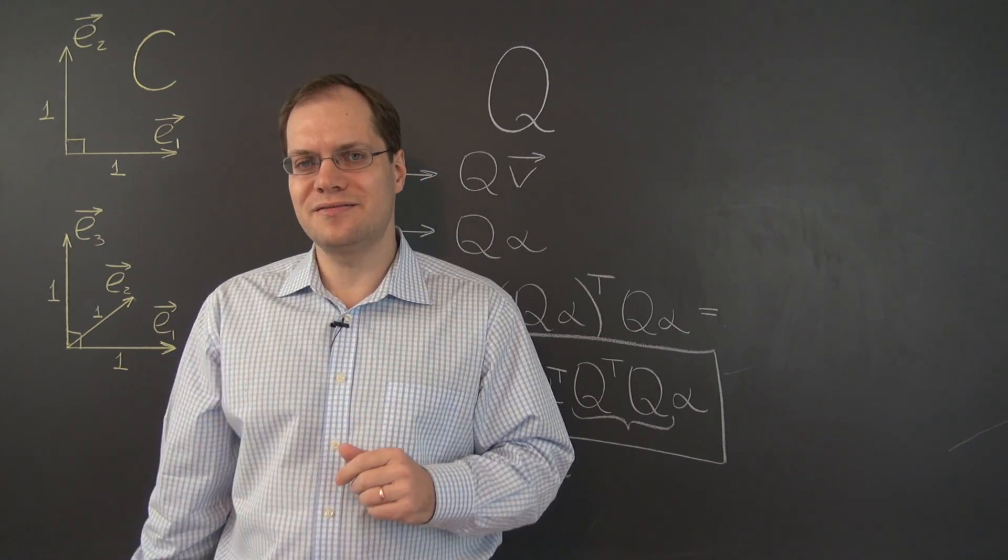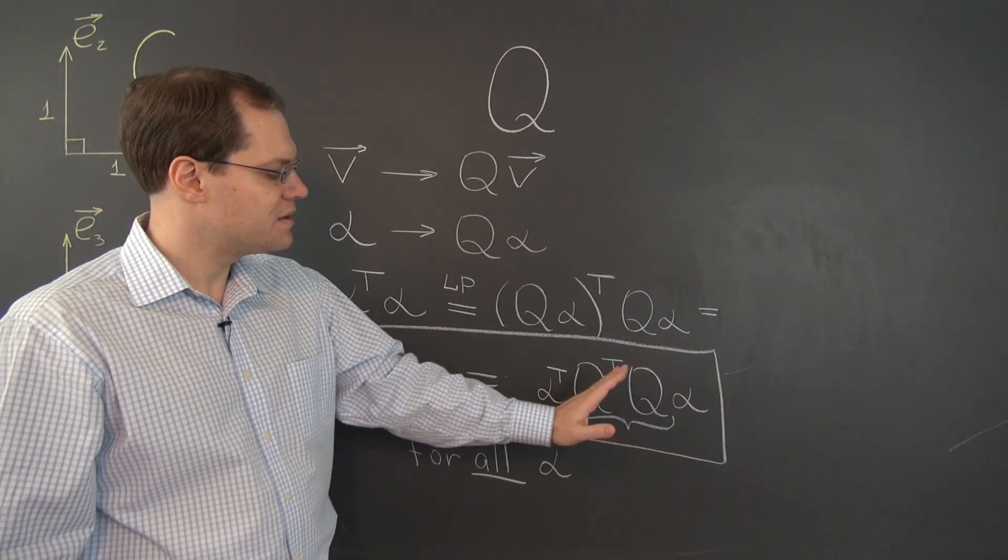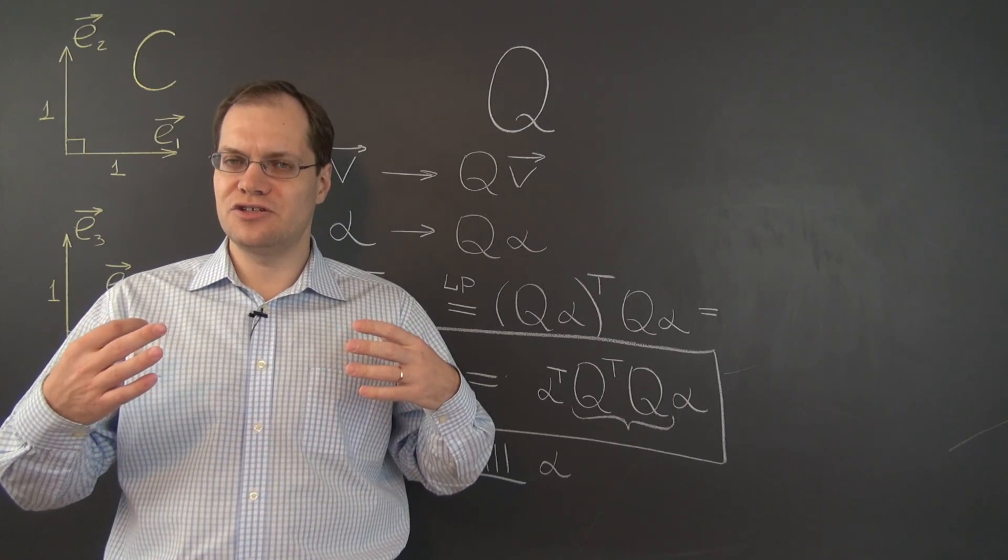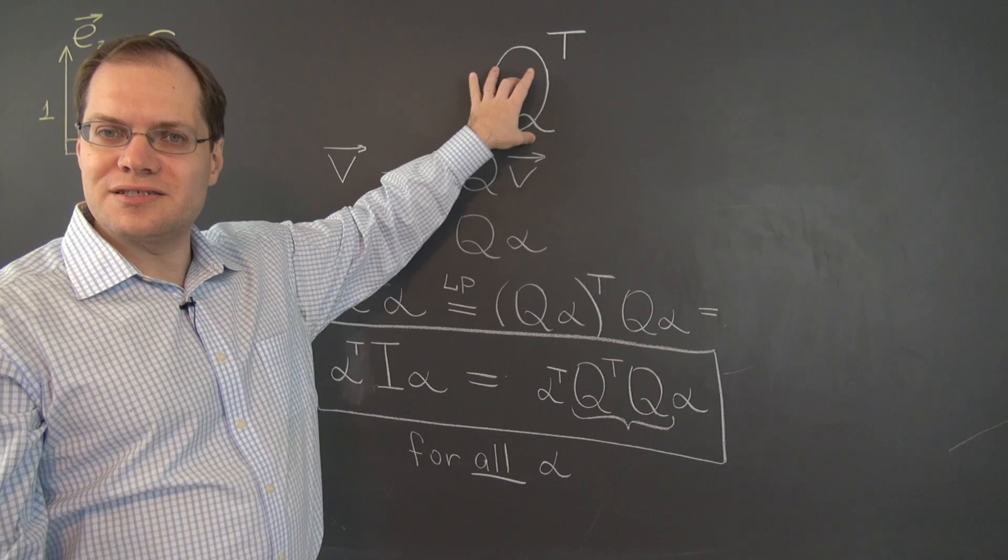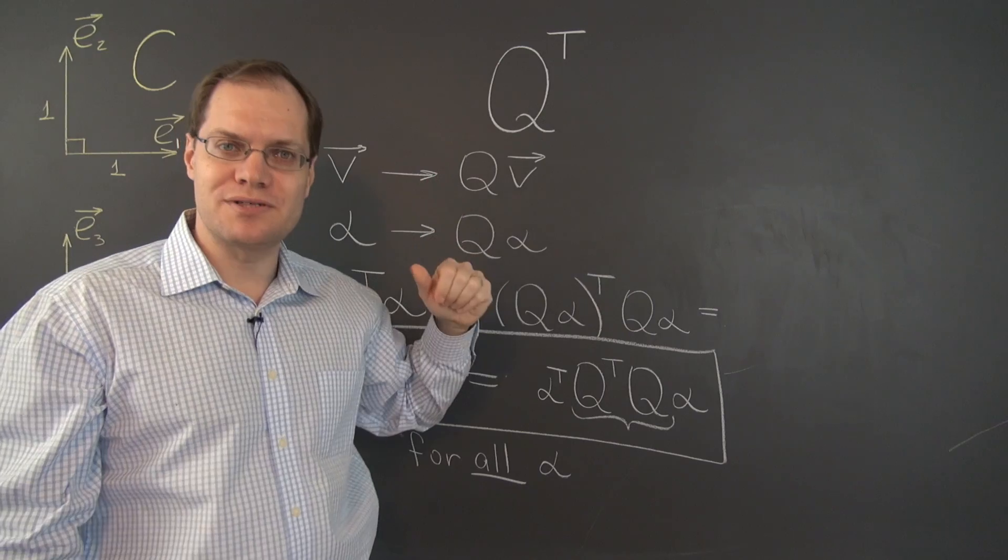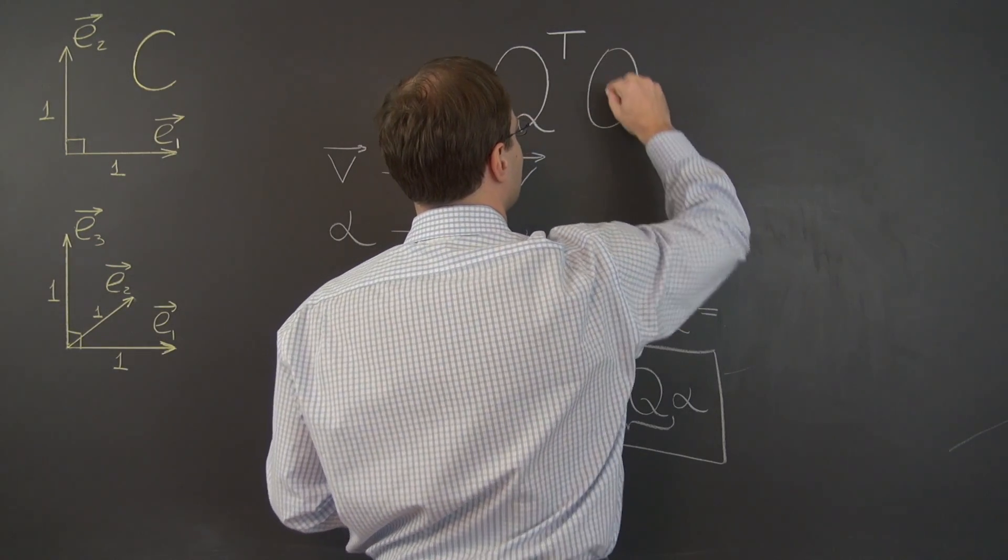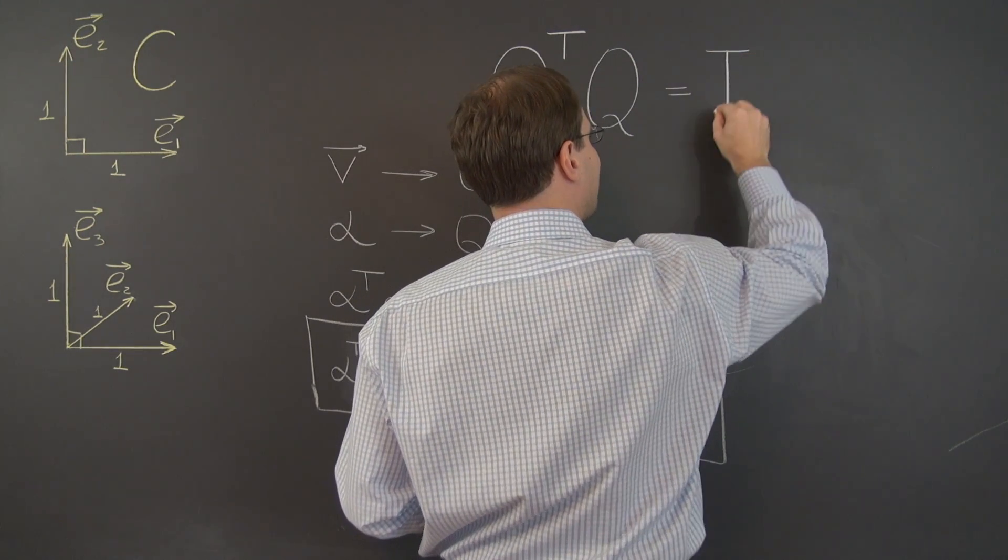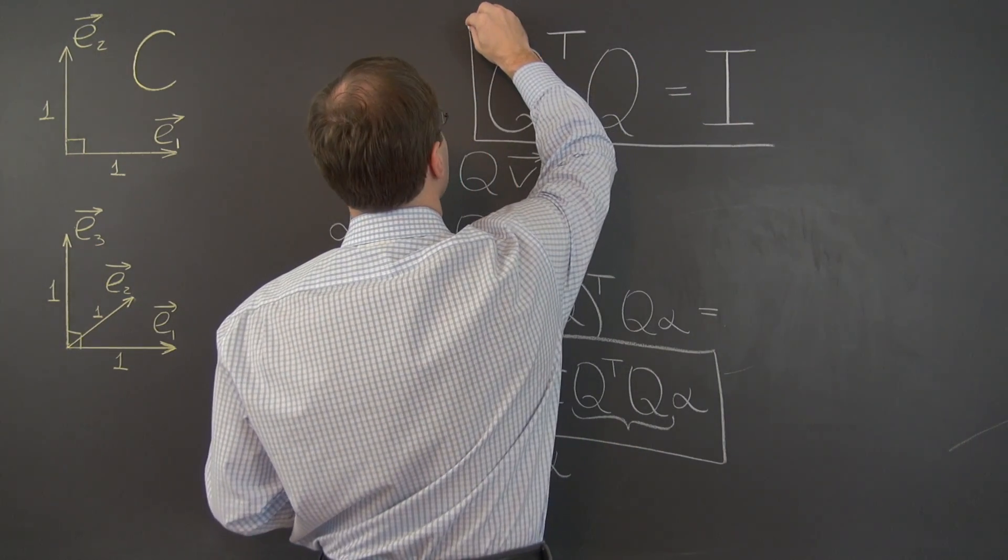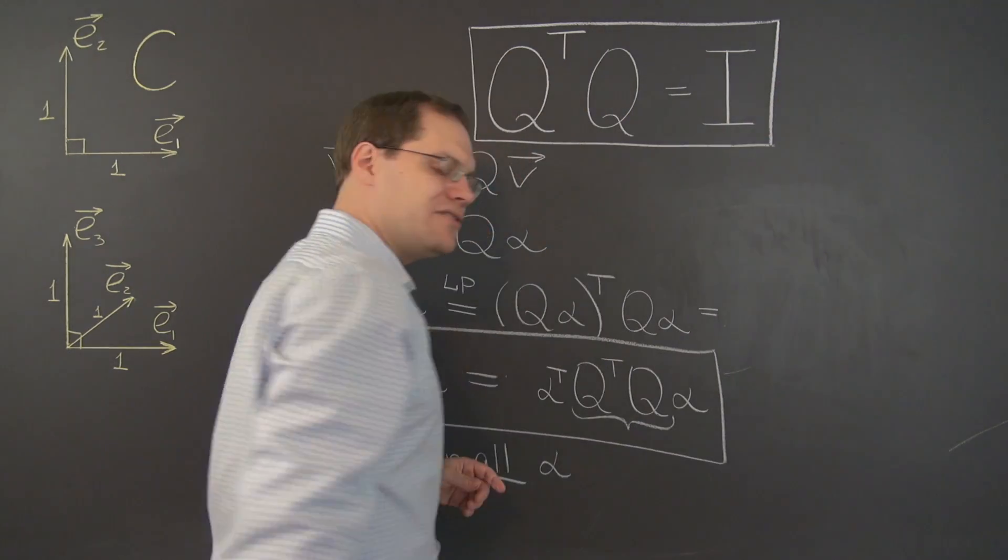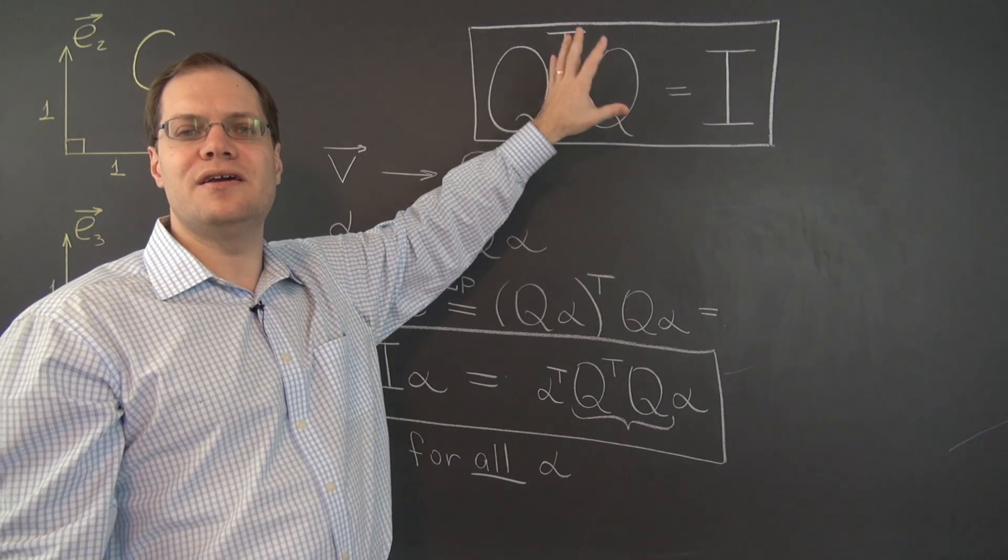Now would that imply that Q transpose Q actually is identity, or could there be some discrepancy between these two matrices? We'll devote a video to it, it won't be hard to show, but indeed that is the case. This is enough to show that Q transpose Q is actually identity. So that's an extraordinarily powerful algebraic identity. I will write it here in huge letters. Q transpose Q equals identity. That's the algebraic characteristic we were after. This also deserves to be boxed. This is what characterizes length-preserving linear transformations with respect to Cartesian bases.